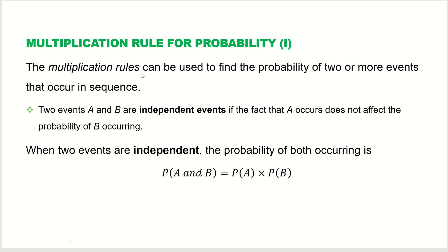The multiplication rules can be used to find the probability of two or more events that occur in a sequence — one after another — or maybe together. Here, we are looking at the independent events. Two events, A and B, are independent events if the fact that A occurs does not affect the probability of B occurring.